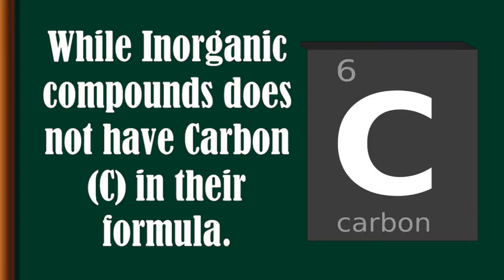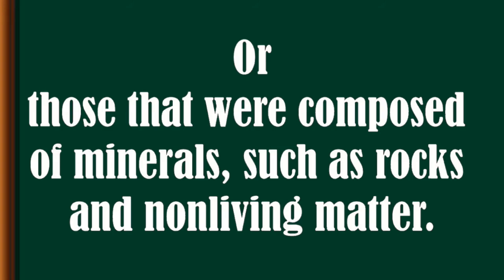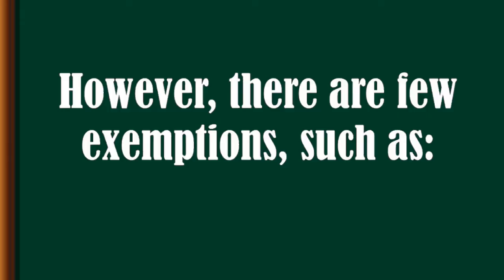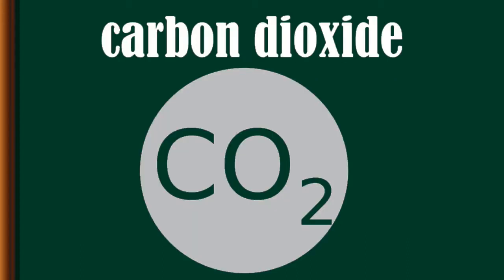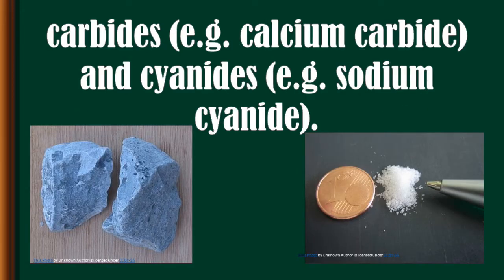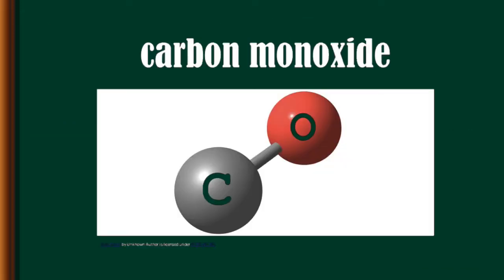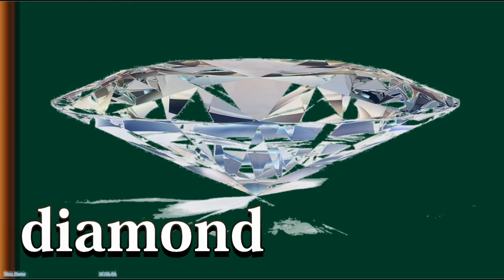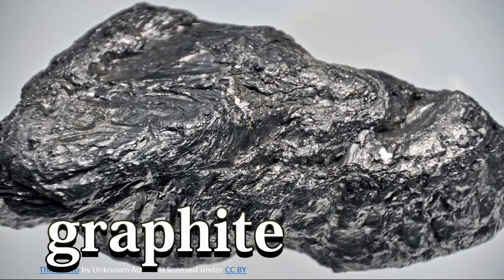Inorganic compounds do not have carbon in their formula, or are those composed of minerals such as rocks and non-living matter. However, there are a few exceptions such as carbon dioxide, carbonates like calcium carbonate, carbides like calcium carbide, cyanides, and carbon monoxide. Pure carbon compounds such as diamond and graphite are also not considered organic compounds.